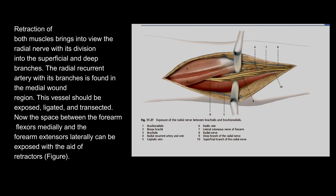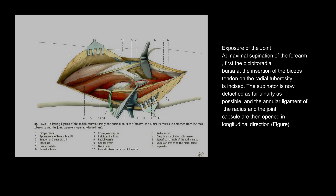The radial recurrent artery with its branches is found in the medial wound region. This vessel should be exposed, ligated, and transected. The space between the forearm flexors medially and the forearm extensors laterally can then be exposed with the aid of retractors.